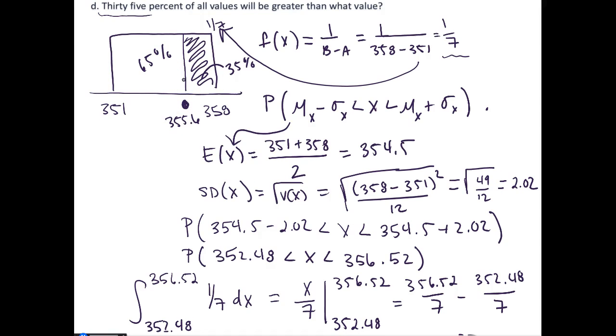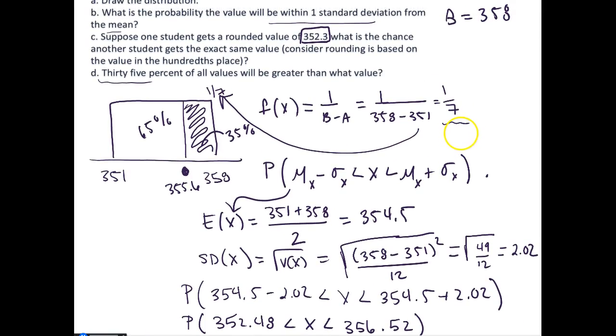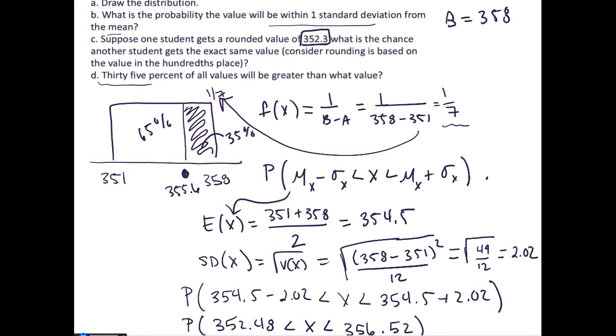This is how we can calculate probabilities, the average and standard deviation, and percentiles for a uniform random variable.